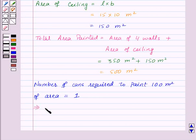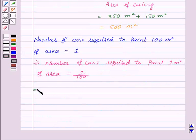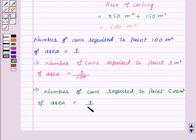Therefore, number of cans required to paint 500 square meters = (1/100) × 500 = 5 cans.